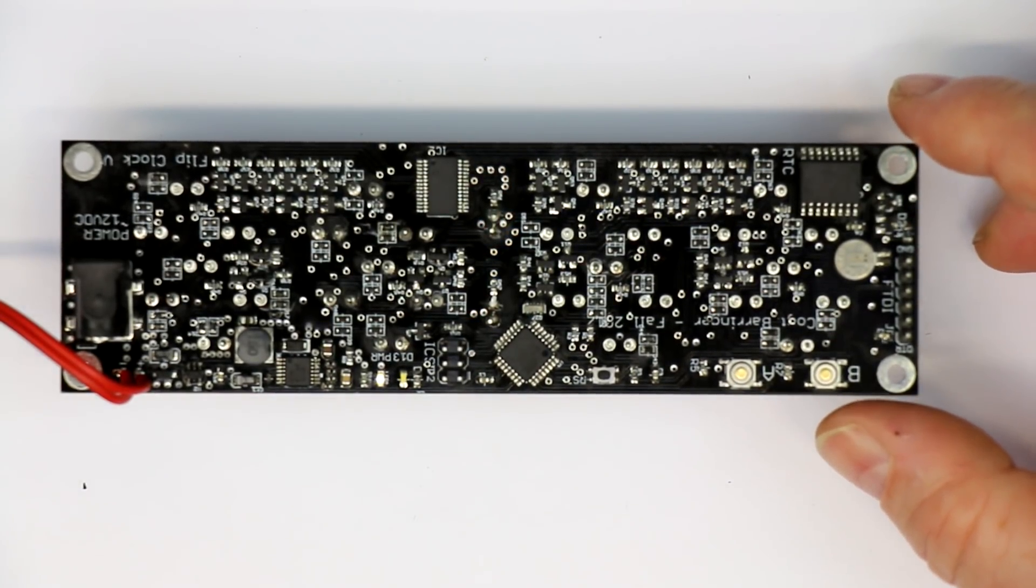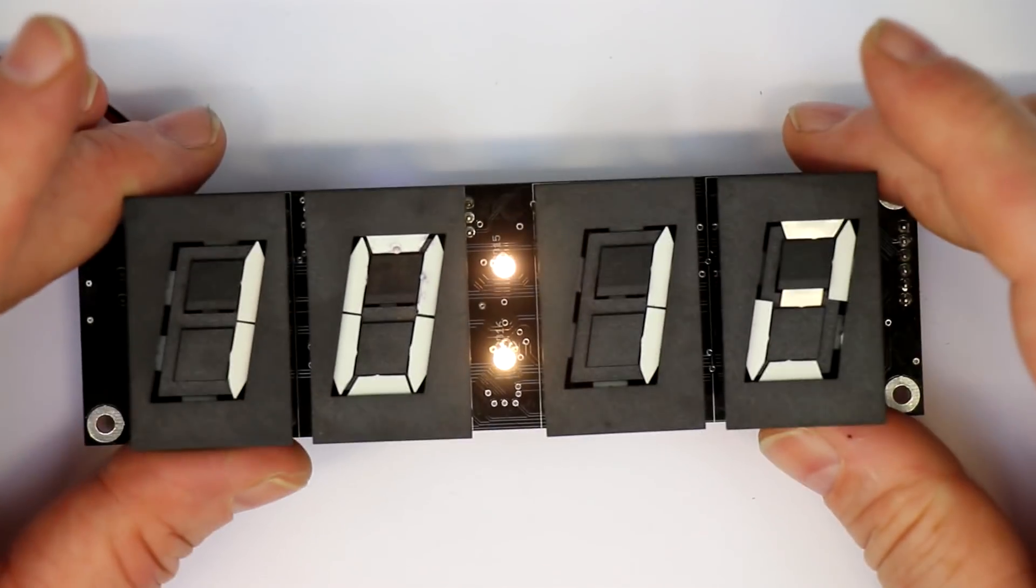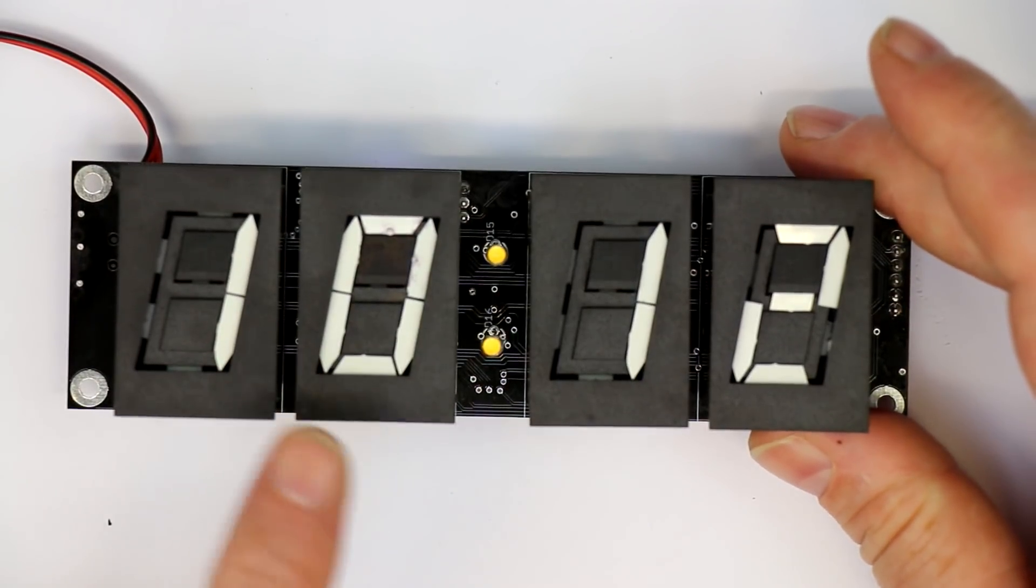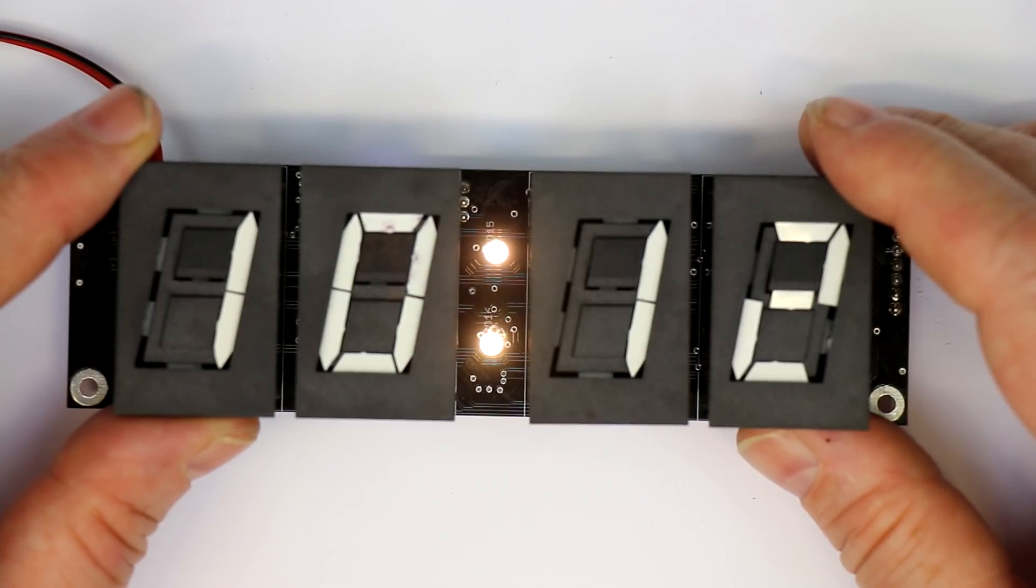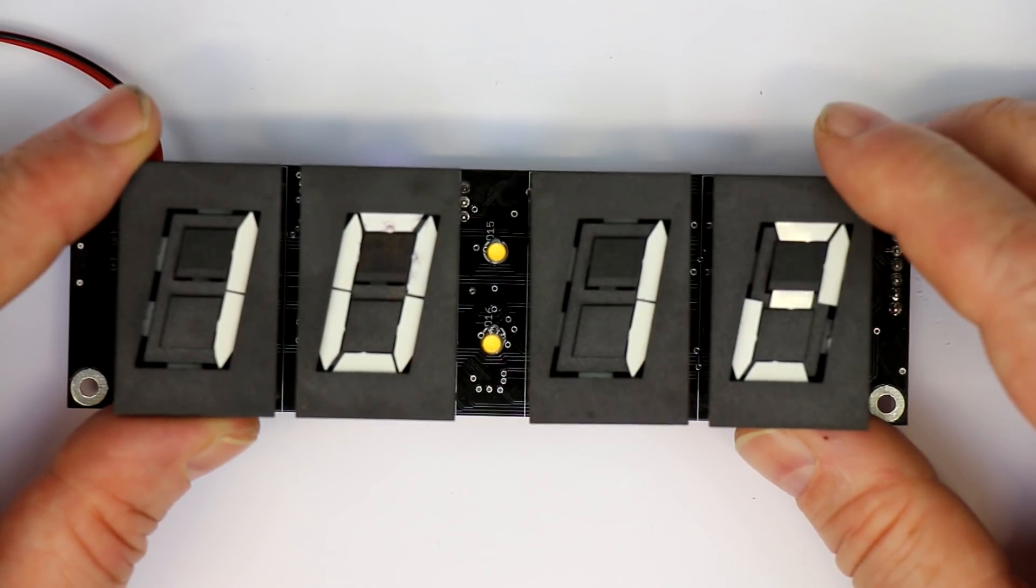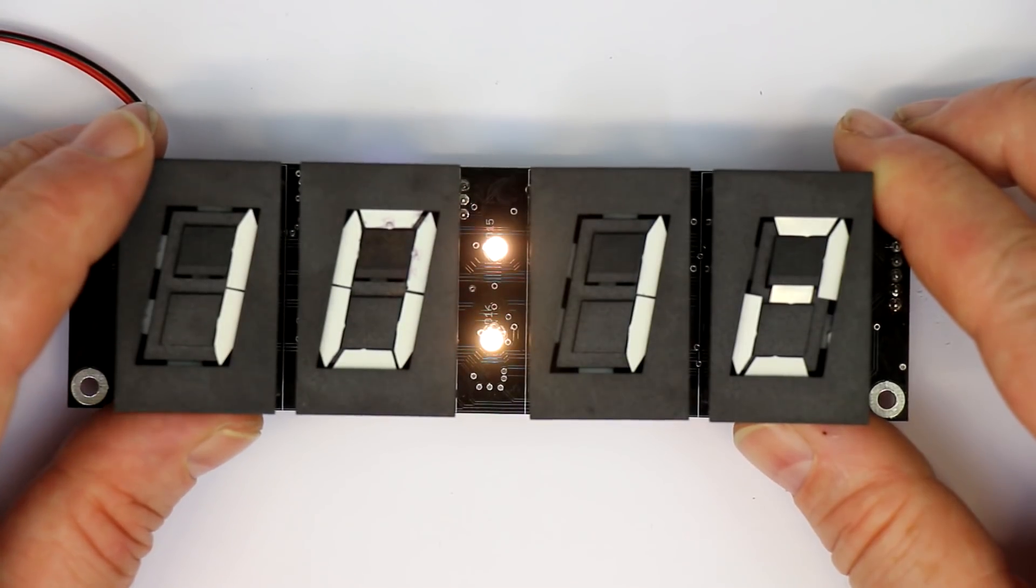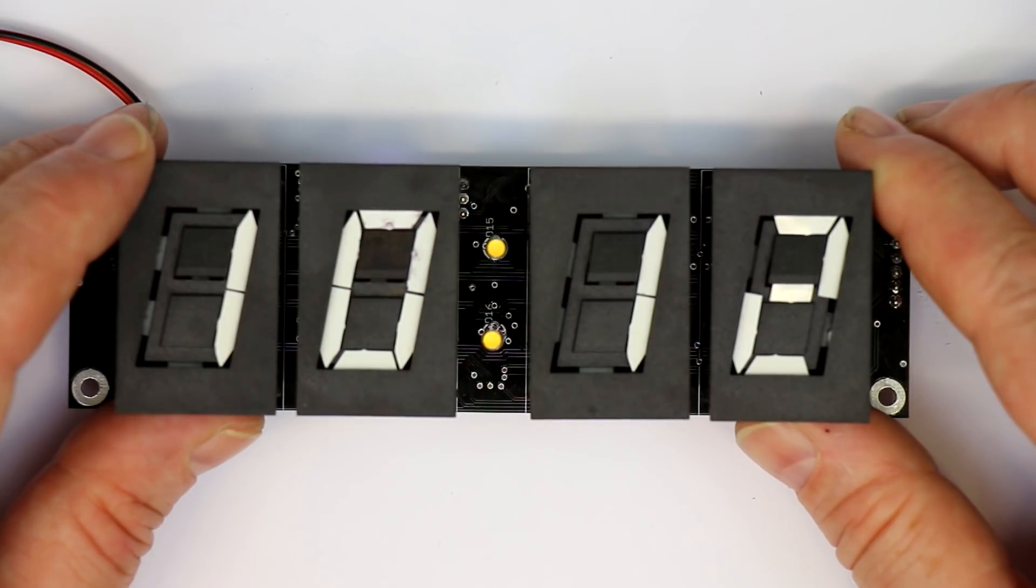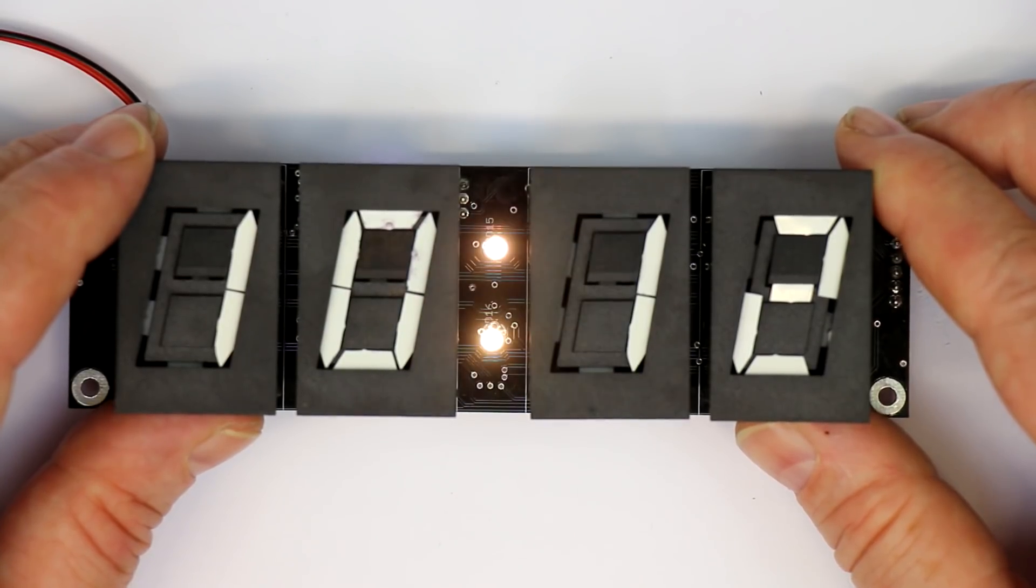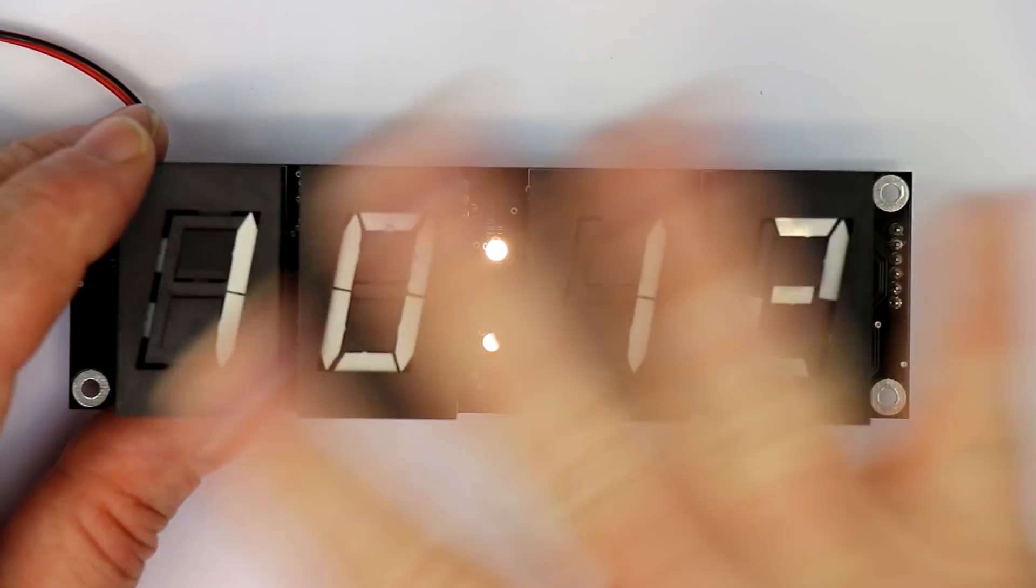That was it for a demonstration of this nice little clock. By the way, these kind of displays are still heavily used in Germany at gasoline stations for indicating your liters or gallons that you are just pumping into your car. That was it for a short demo of this flip digit clock. Thanks for watching. If you liked it please give it a big thumbs up. Until next time, bye from Roger, bye from Kankalabs.